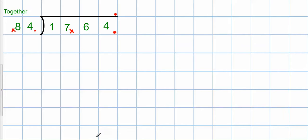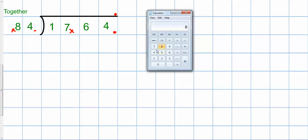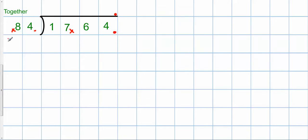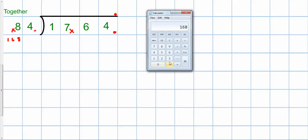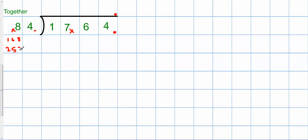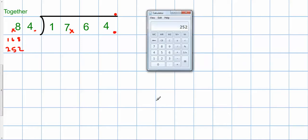So, I need some help here. I can't add 84s together in my head. 84 plus 84 gives me 168. 252.